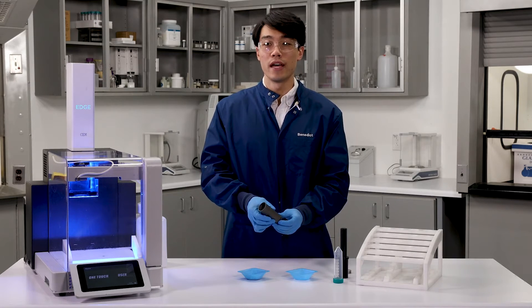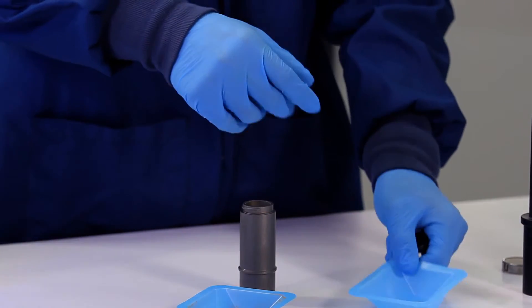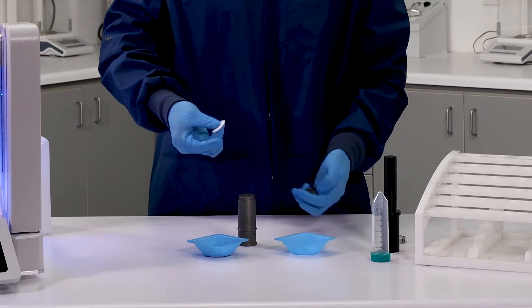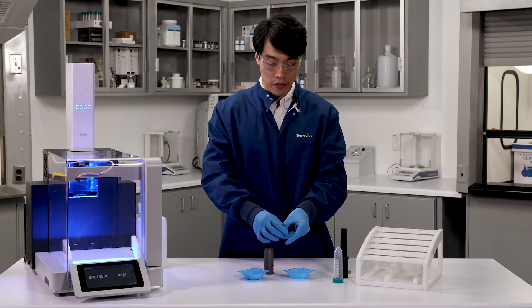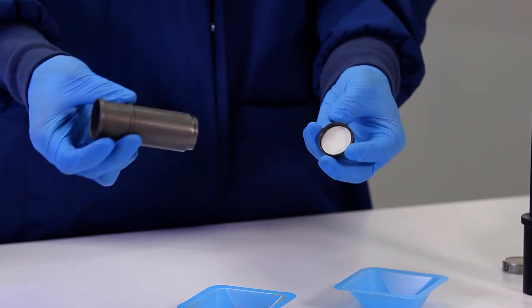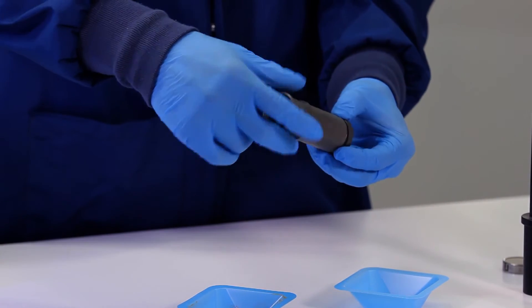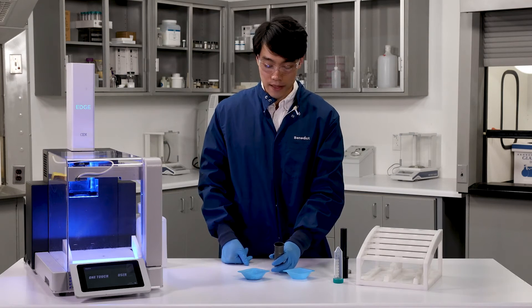So the first thing we're going to do is disassemble our sample cell, and into the bottom, I'll go ahead and insert one of our Q-disks, which acts as our inline filtration for the Edge. I'll make sure it's laying nice and flat around the bottom. I'll take the two components, assemble them together, and then our sample cell has been completed.